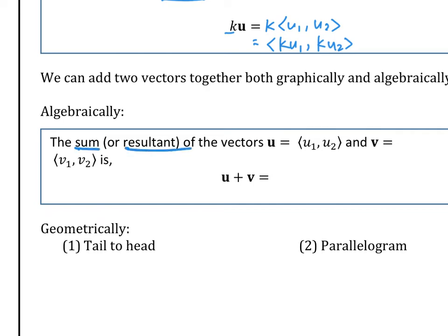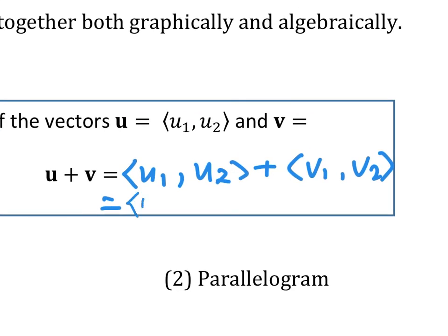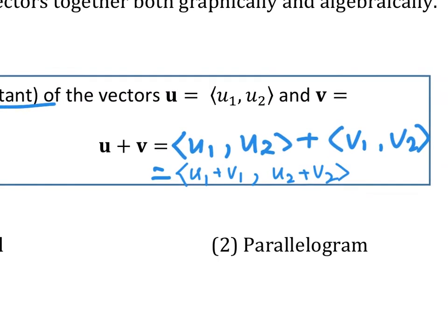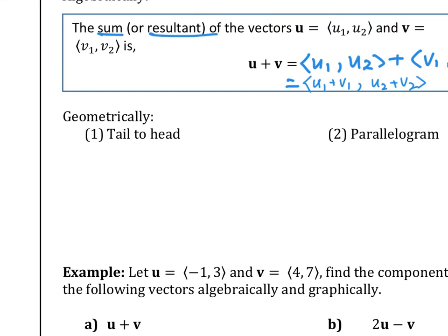The next operation is the resultant, or the sum of vectors. When you add two vectors together, it's straightforward: take the component form of each vector and add the respective components — x plus x, and y plus y. The math is simple; it's understanding what the vector represents that's harder.